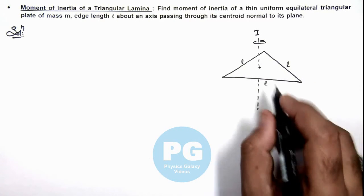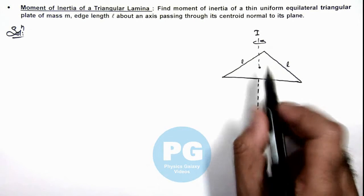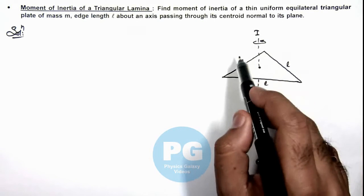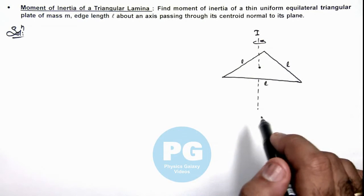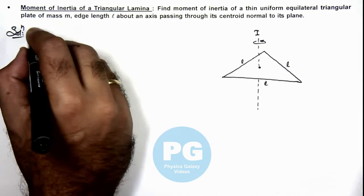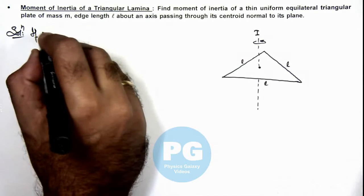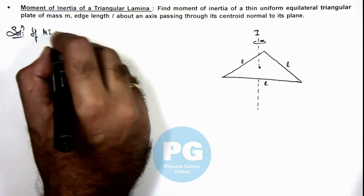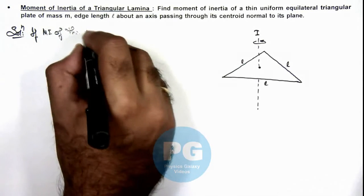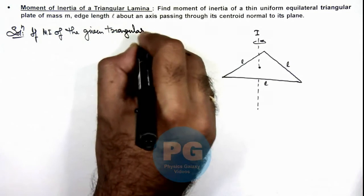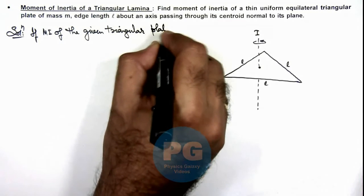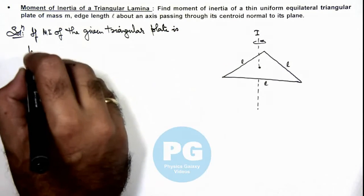Then in this situation we can say the moment of inertia is always proportional to the square of any dimension of the given object. So here we can consider MI of the given triangular plate as I = γml² where γ is a constant.